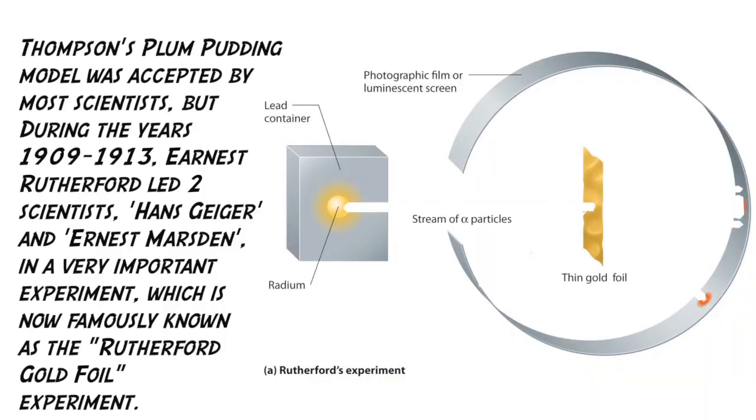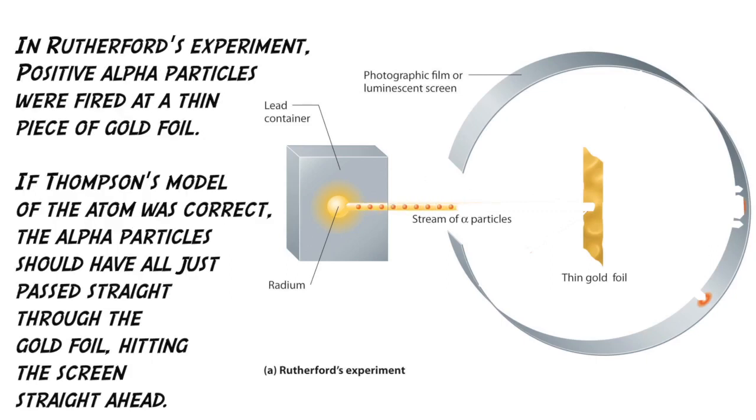Thompson's plum pudding model was accepted by most scientists. But during the years 1909 till 1913, Ernest Rutherford led two scientists, Hans Geiger and Ernest Marsden, in a very important experiment, which is now famously known as the Rutherford Gold Foil Experiment. In Rutherford's experiment, positive alpha particles were fired at a thin piece of gold foil.